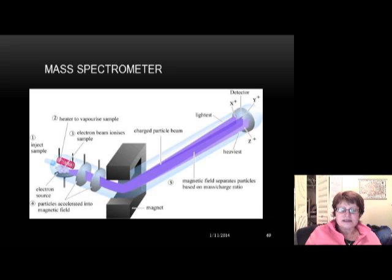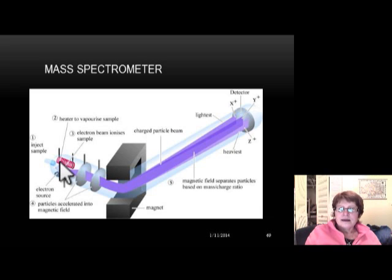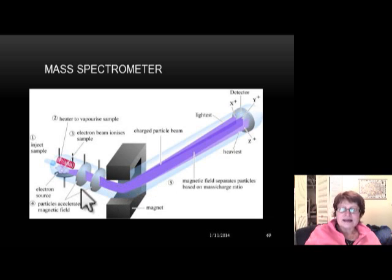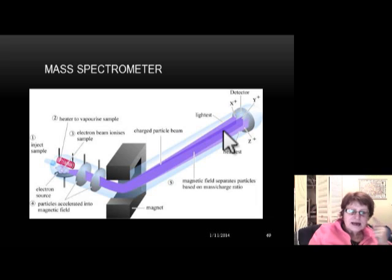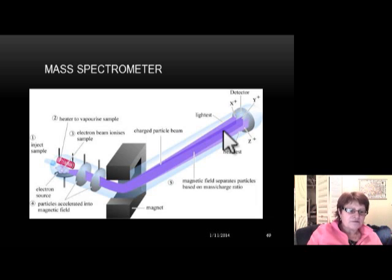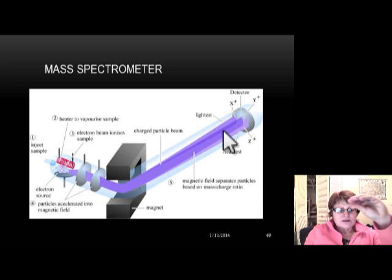The diagram shows how the mass spectrometer works. You put the sample in, an electron beam ionizes it, and as the sample passes through a very strong magnet, it separates into different isotopes by mass — heaviest to lightest. For example, uranium-235 and uranium-238 differ by three neutrons, so the strong magnet separates the heavier and lighter isotopes from each other.